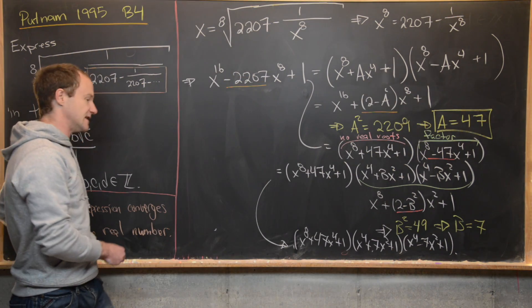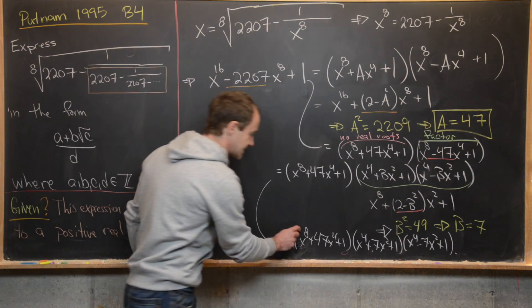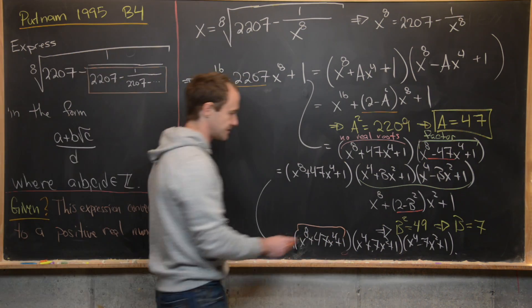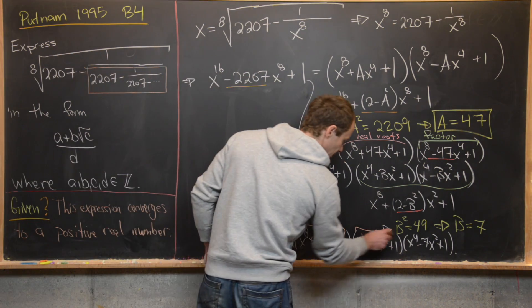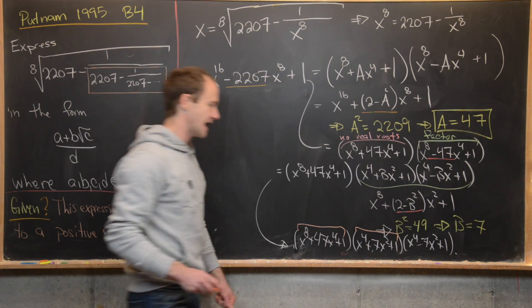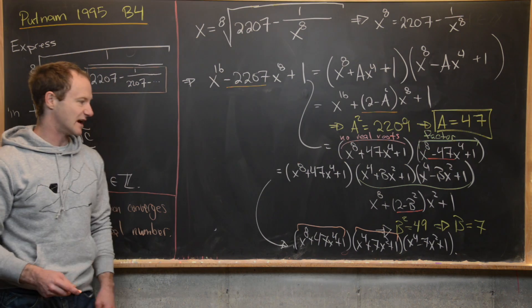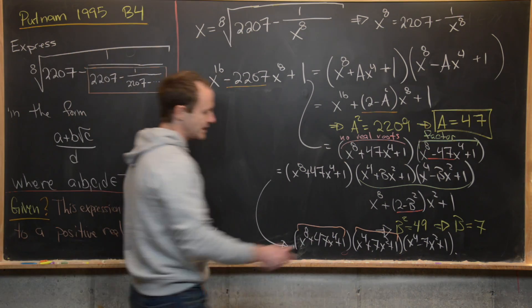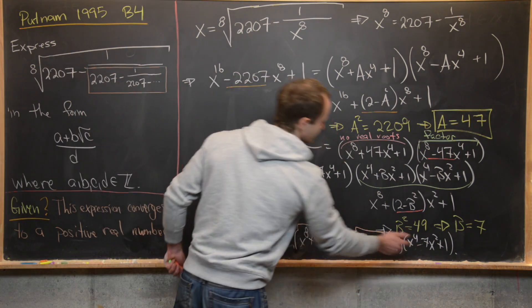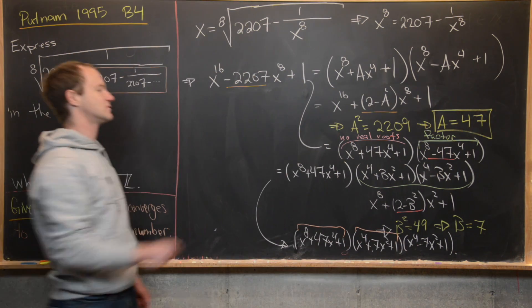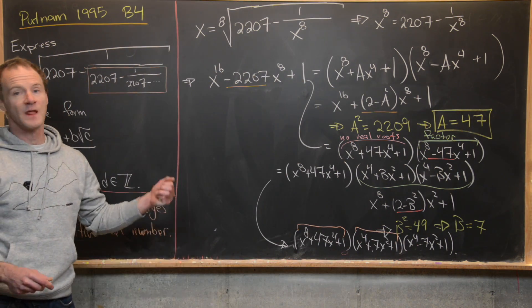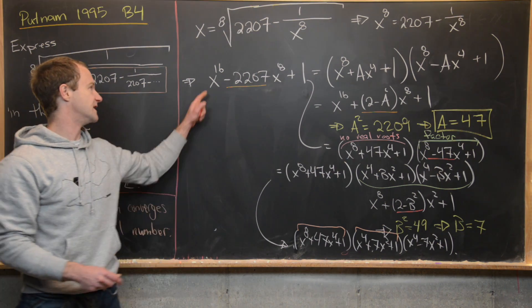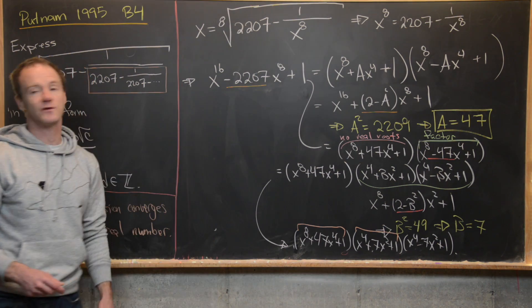The first factor, x to the eighth plus 47x to the fourth plus 1, has no real roots. The factor x to the fourth plus 7x squared plus 1 similarly has no real roots. So we need to try to factor that last one, x to the fourth minus 7x squared plus 1, using the same trick — which I'll let you work out — and we'll continue with the polynomial fully factored.